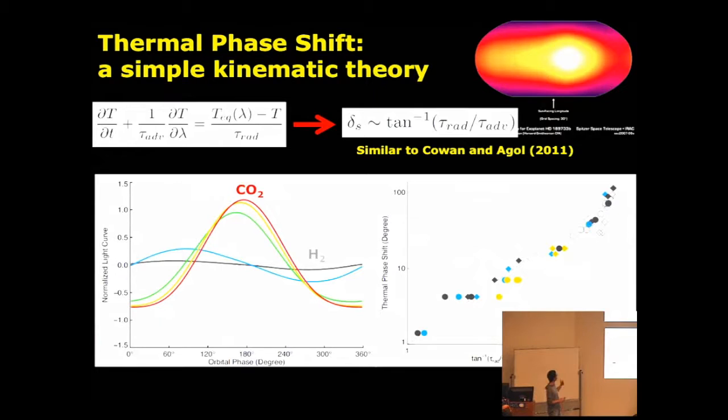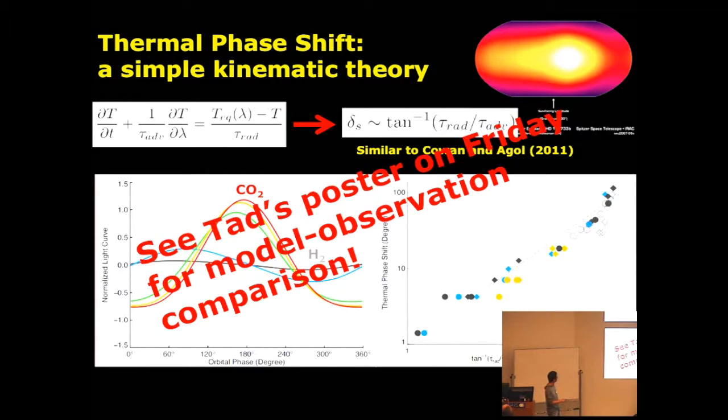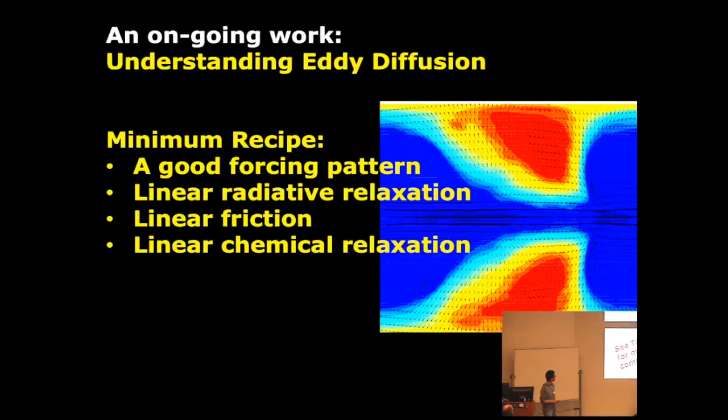Also for the phase shift, we have a simple theory to explain those phase shift changes with different compositions. This simple theory depends on radiative timescale and advective timescale, actually corresponding well with 3D GCM simulations. I think this is a good theory and we can predict this kind of stuff. For observers and people doing retrievals, you don't need to run GCM. And of course, you have to see Ted's poster on Friday for model observations comparison.